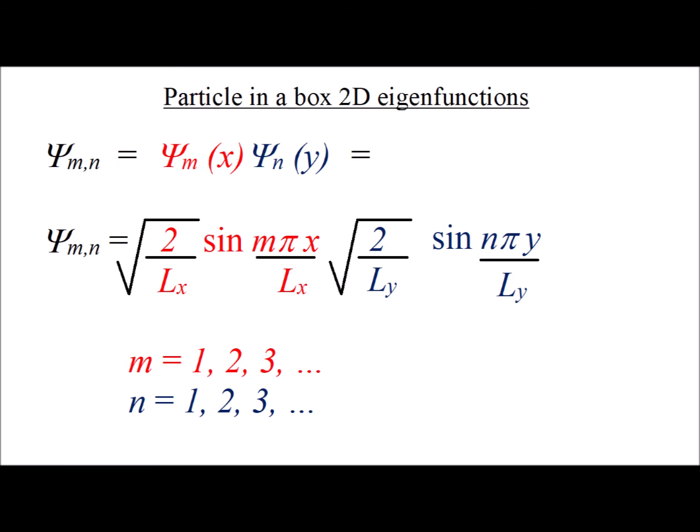It turns out that we can write the eigenfunctions as the product of two different functions. The first one, shown in red, psi m, is just a function of x and the blue function, psi sub n of y, a function entirely of y. So we're able to break the two dimensional problem into a product of one dimensional problems that we already know how to solve.